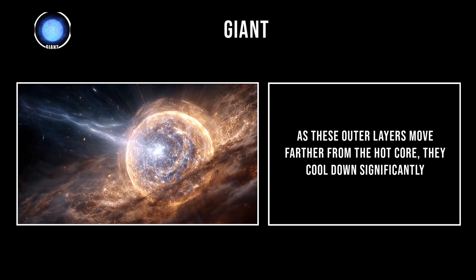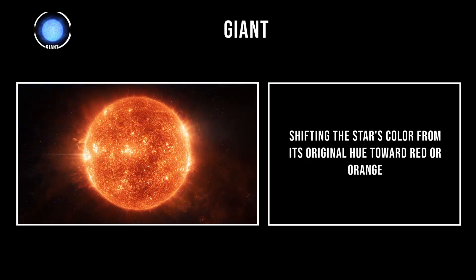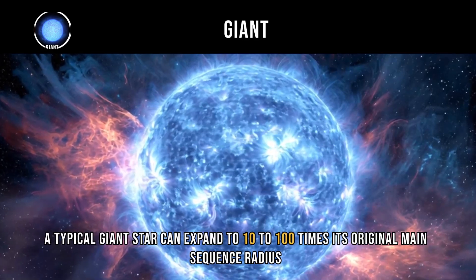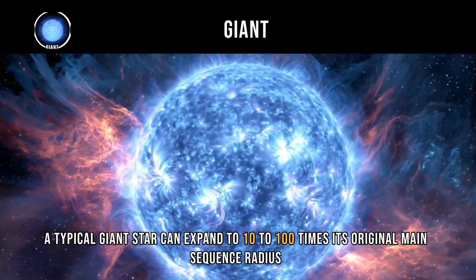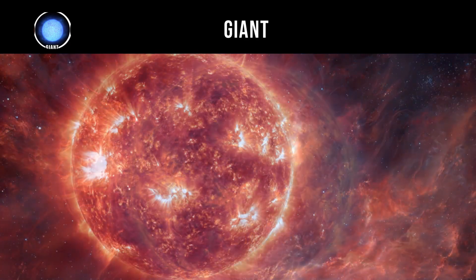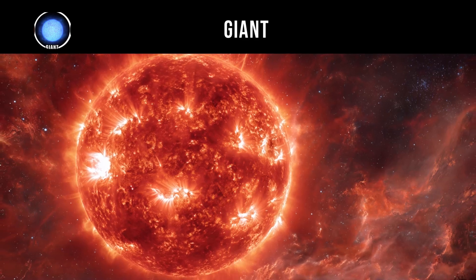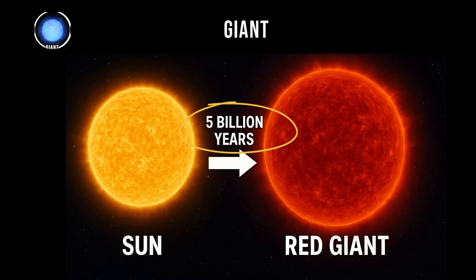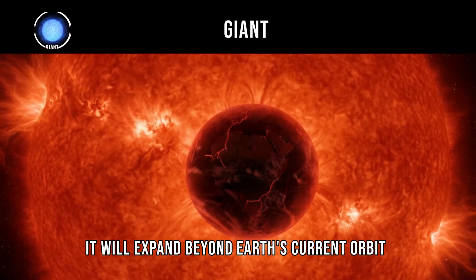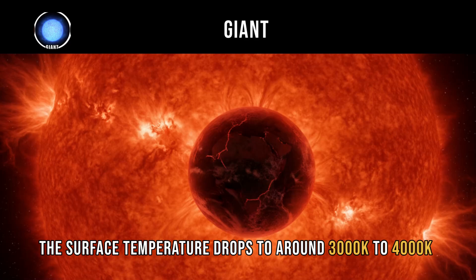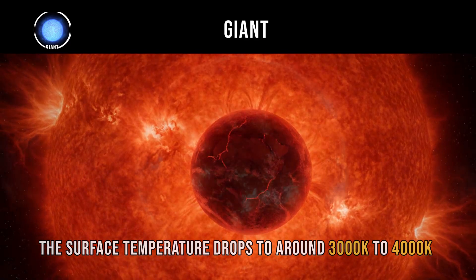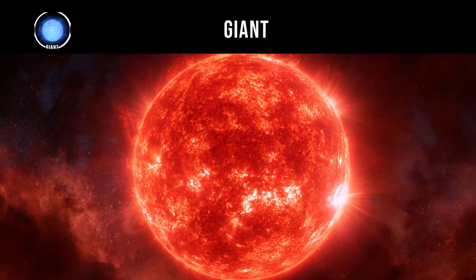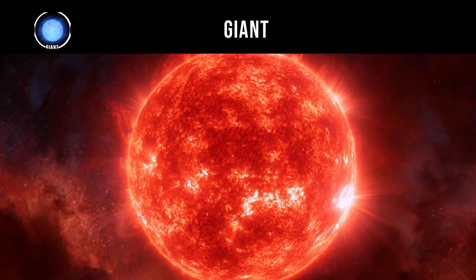As these outer layers move farther from the hot core, they cool down significantly, shifting the star's color from its original hue toward red or orange. A typical giant star can expand to 10 to 100 times its original main sequence radius. When our sun becomes a red giant in approximately 5 billion years, it will expand beyond Earth's current orbit. The surface temperature drops to around 3,000 to 4,000 Kelvin, giving these stars their characteristic red appearance despite their increased luminosity.